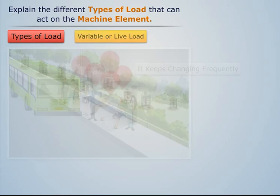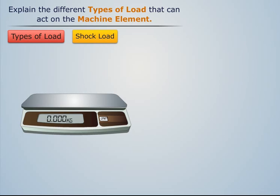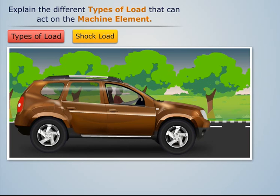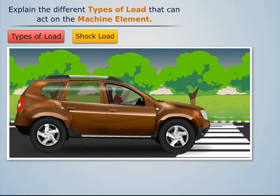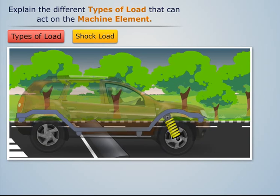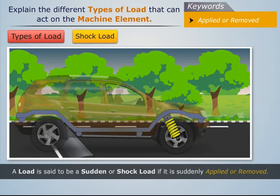Now let us understand what shock load is. Consider an electronic weighing machine — when a weight is placed on the machine it displays the weight, and when the weight is removed the display also goes off. Consider another example: a car. When we drive a car, a shock is applied due to a change in the road surface or a sudden change in speed. Thus, a load is said to be a sudden or shock load if it is suddenly applied or removed.